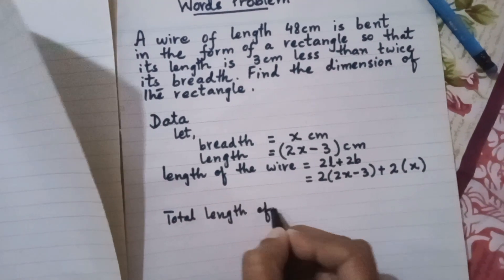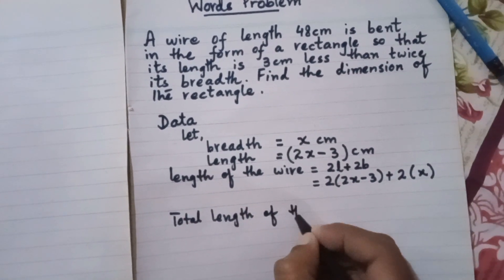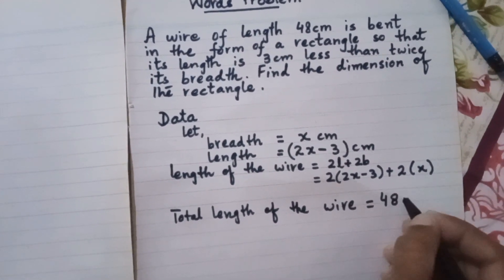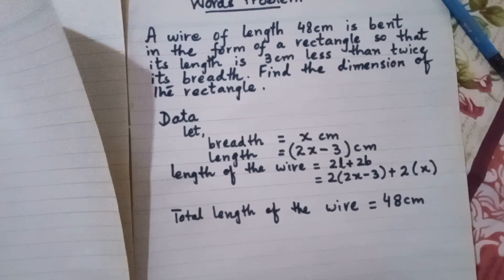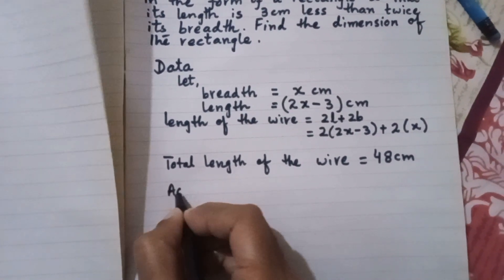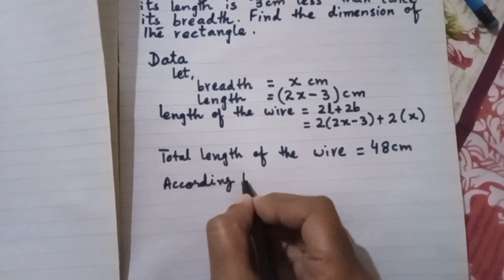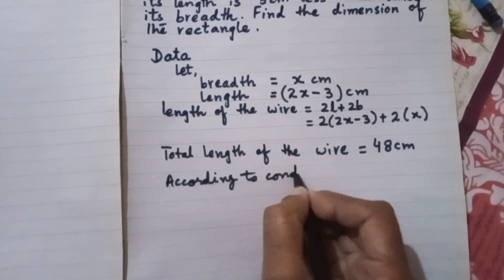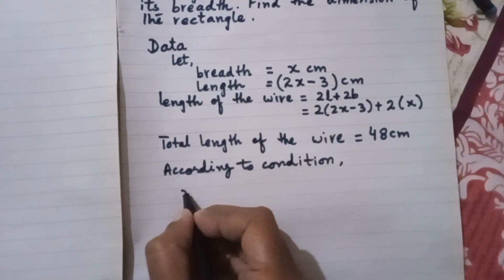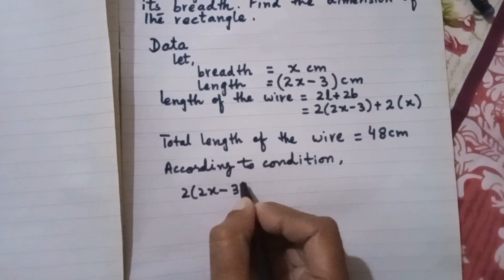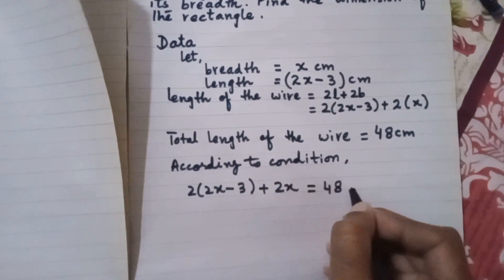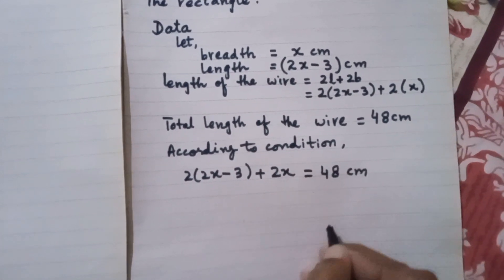The total length of the wire is 48 centimeters. According to the question, we set up the equation: 2 bracket (2x minus 3) plus 2x equals 48. Now we solve this equation to find the dimensions of the rectangle.